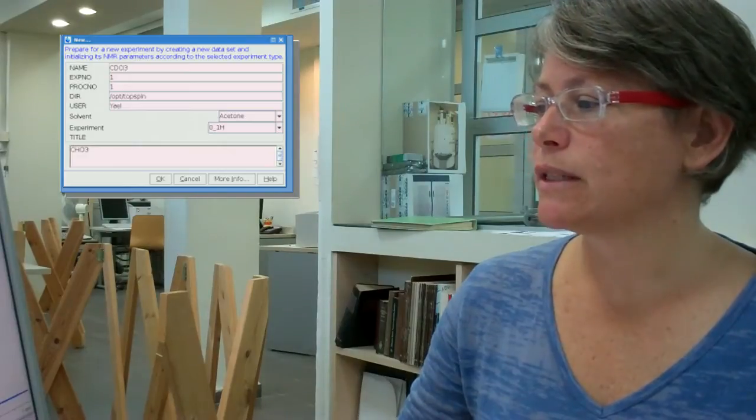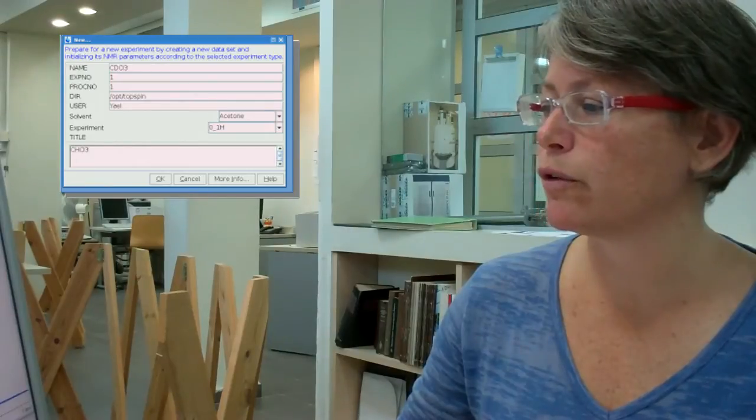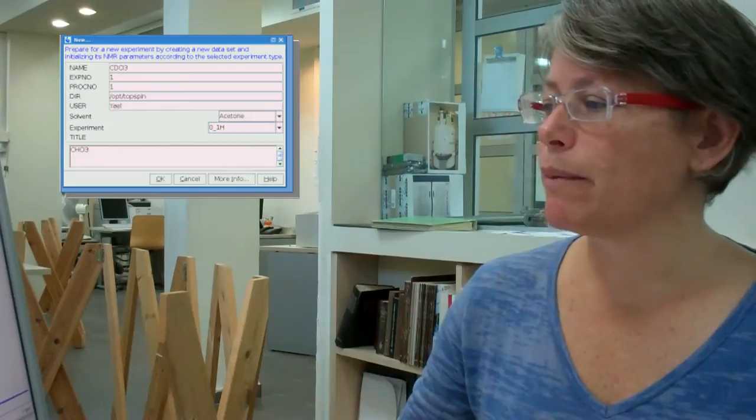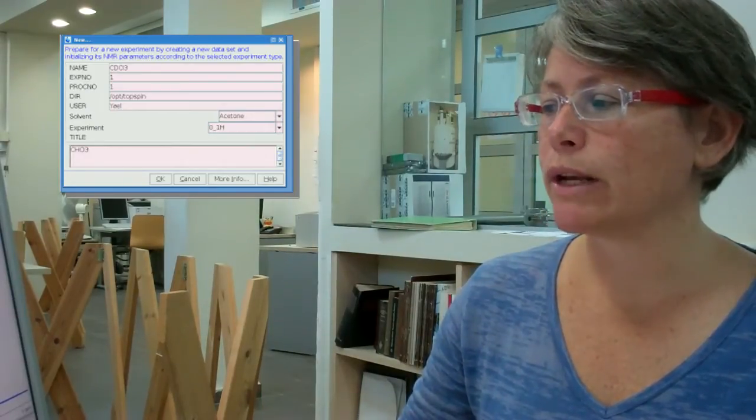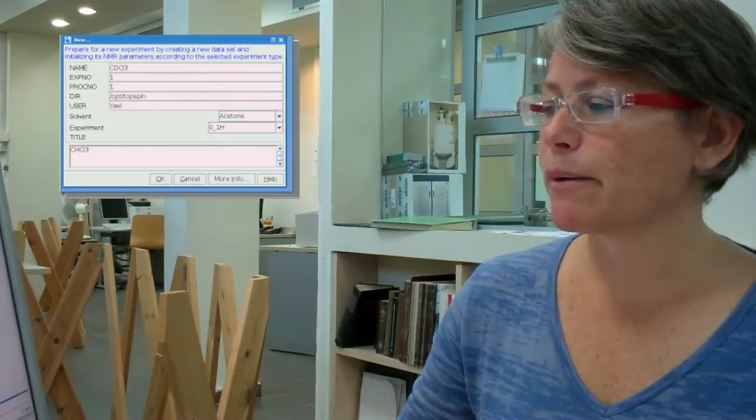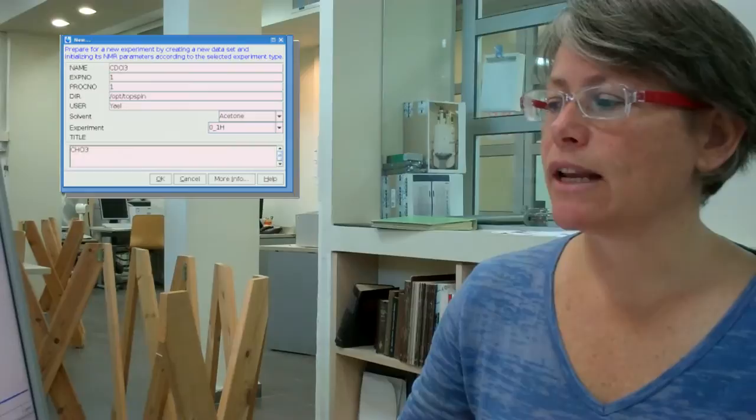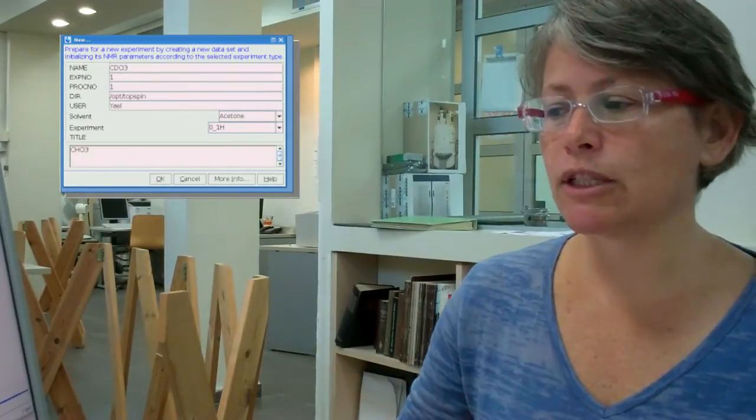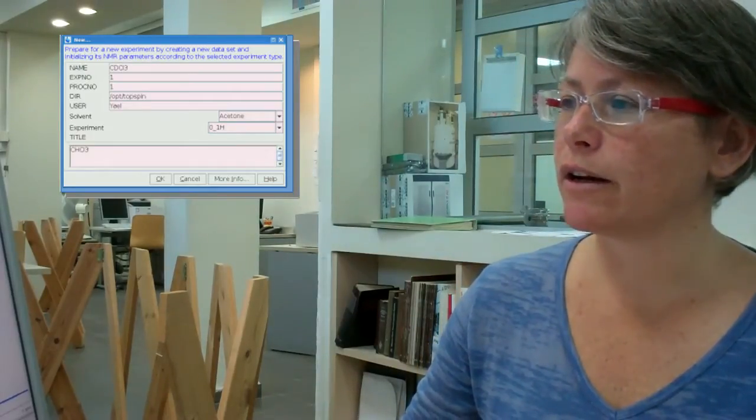For solvent, I'll here choose what solvent I'm going to use. I've got a sample with deuterated chloroform, and so I select CDCL3. For experiment, I'm going to scroll down and choose 0_1H. That's the same exact parameter set as this one that's written just 1H, just that it's higher up on the list because of the 0. For title, I'll type in the title of the material that I'm going to use, and then I'll click on OK.